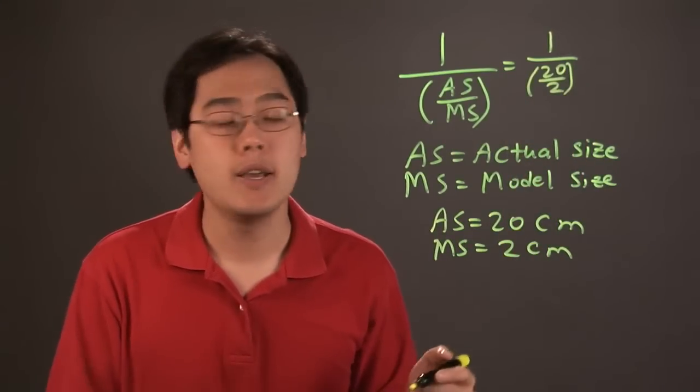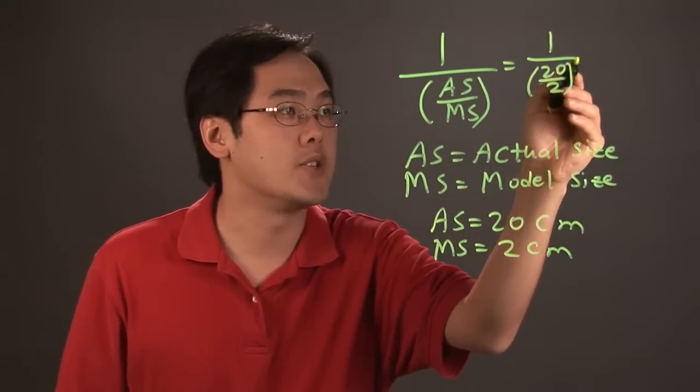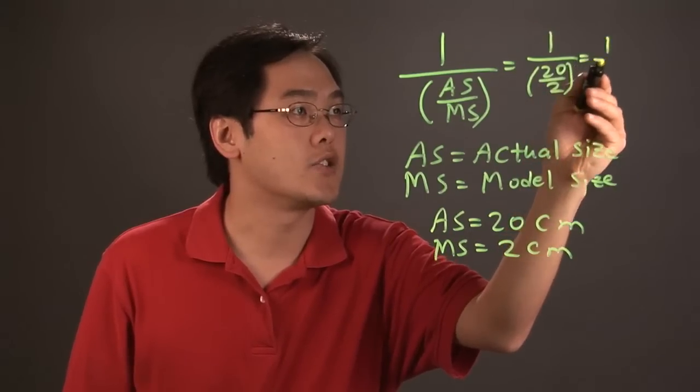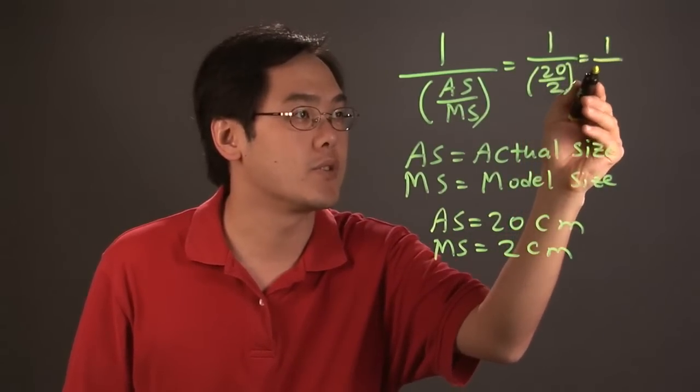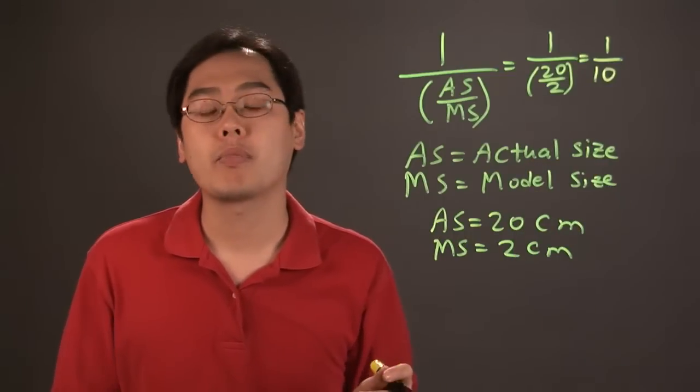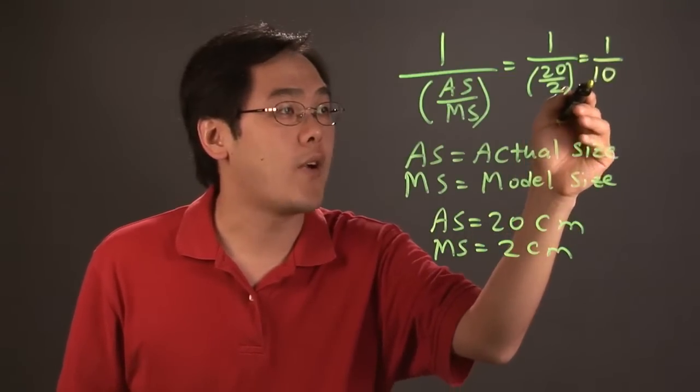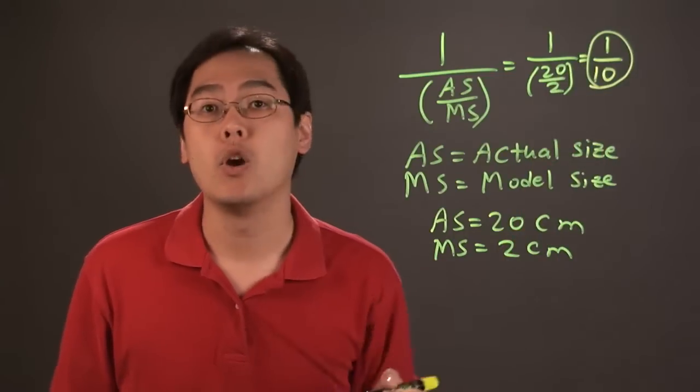Now, you can multiply by the reciprocal here, but it's actually pretty easy to reduce in this particular case. You just do one over 20 divided by 2, which is going to be 10. So, the fractional scale here is 1 to 10.